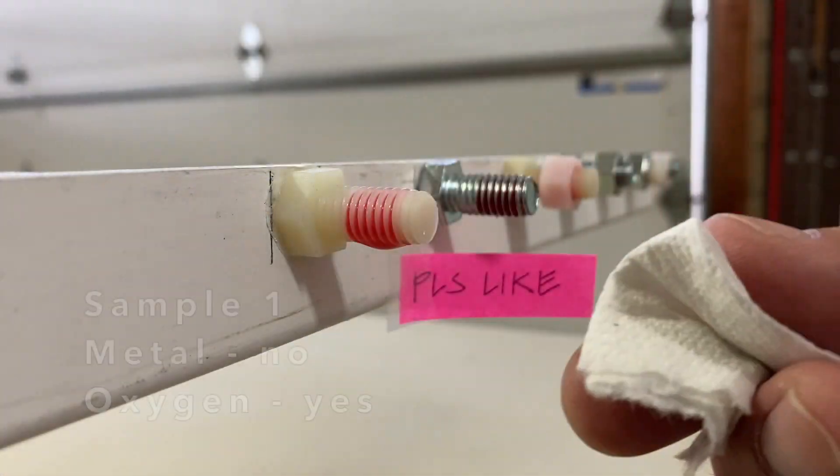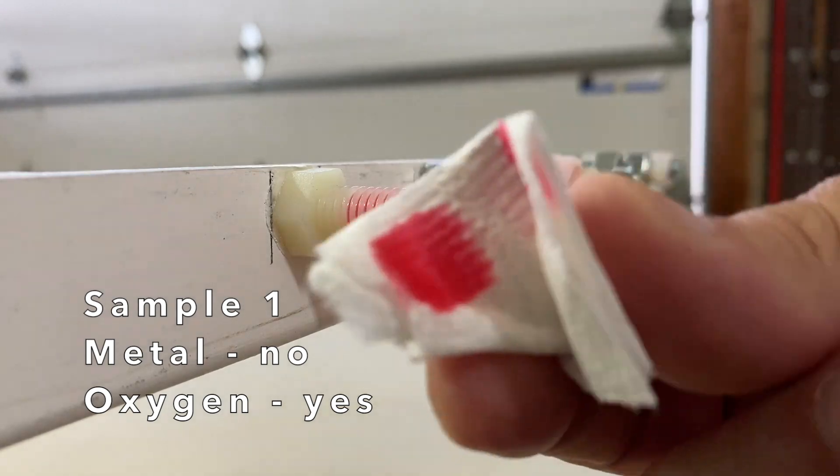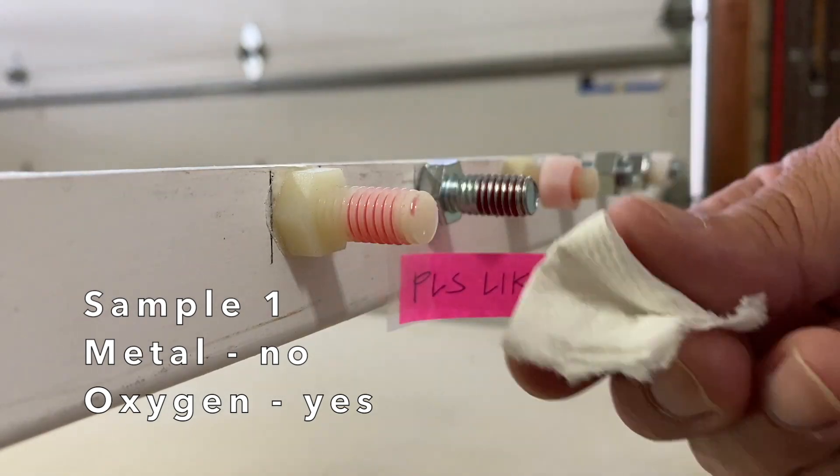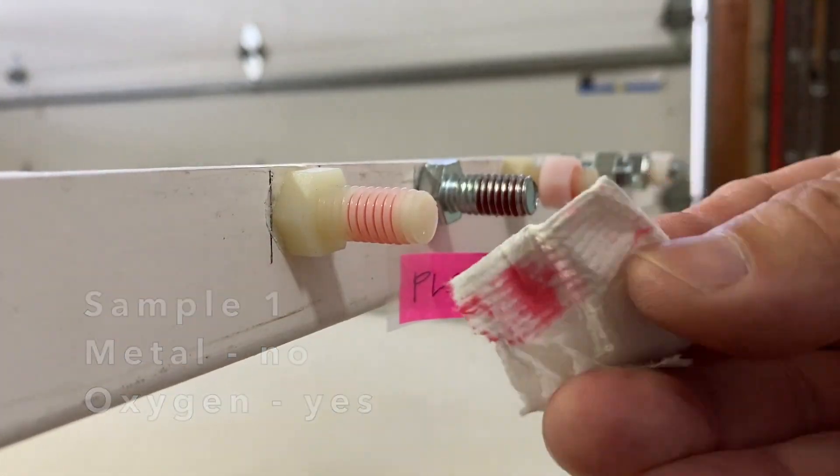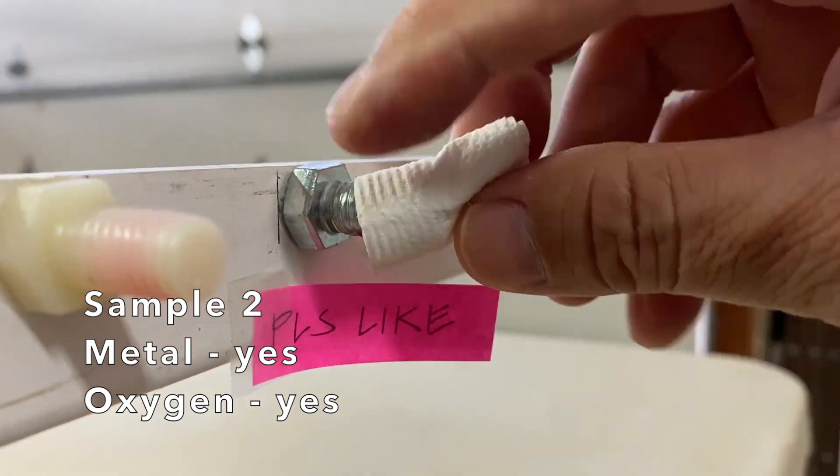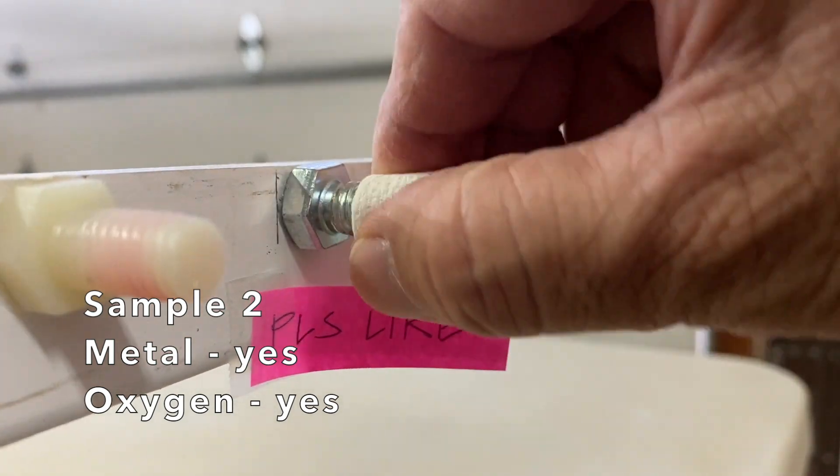We see that the Threadlocker in sample 1 that was in contact with air and non-metal did not cure or harden. Same with sample 2 that was in contact with air and metal, it did not cure.